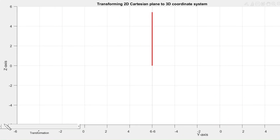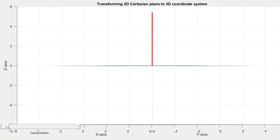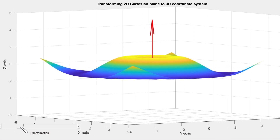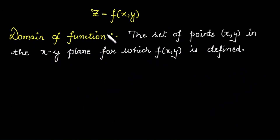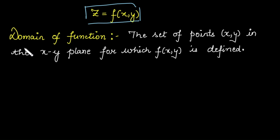Once we add the z-axis to the 2D plane, we get a 3D coordinate system. The basic points for a function of two variables are the domain and the range. The domain of this function is the set of those points (x, y) from the xy-plane for which the function is defined. That domain may be the entire xy-plane or may be some part of the xy-plane.